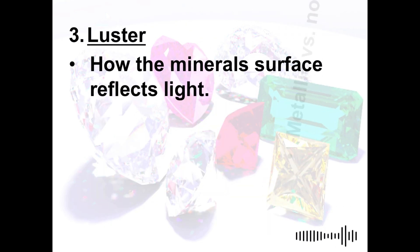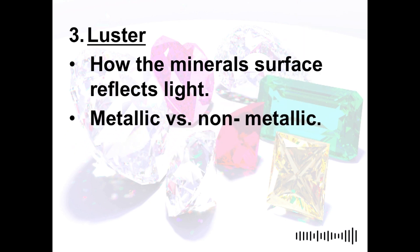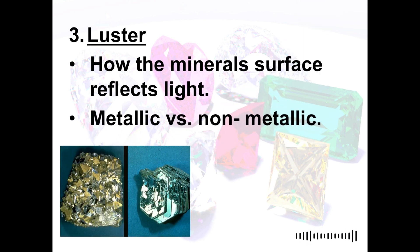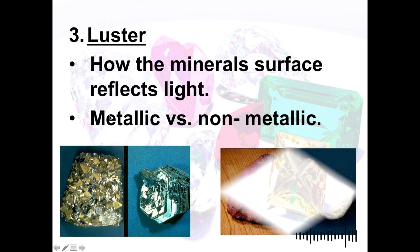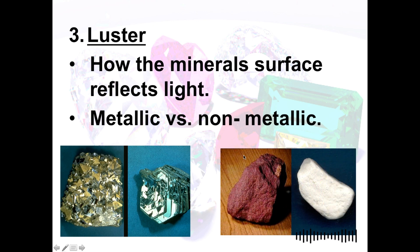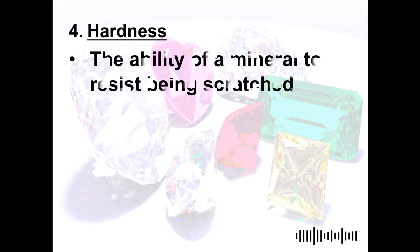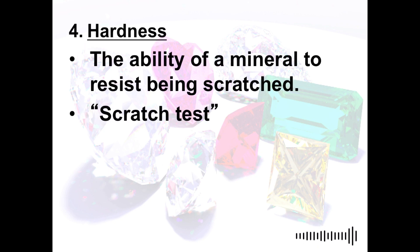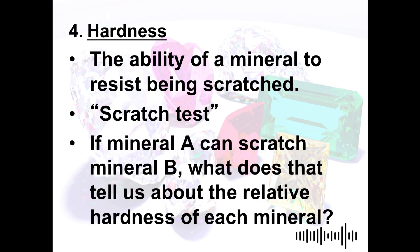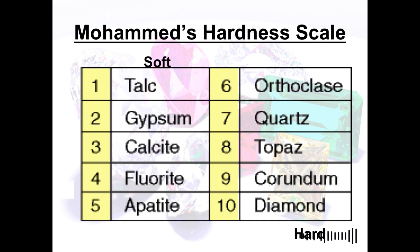The next property is luster. Luster is how the mineral's surface reflects light — it can be metallic or non-metallic. After that, we have hardness, which is defined as the ability of a mineral to resist being scratched. I have prepared an illustration to help you understand this clearly.